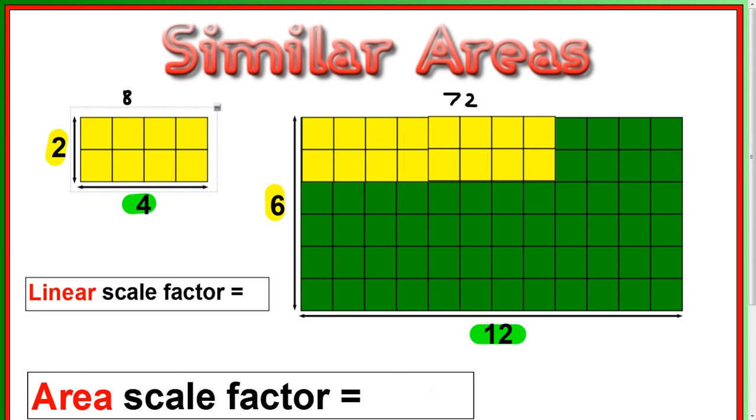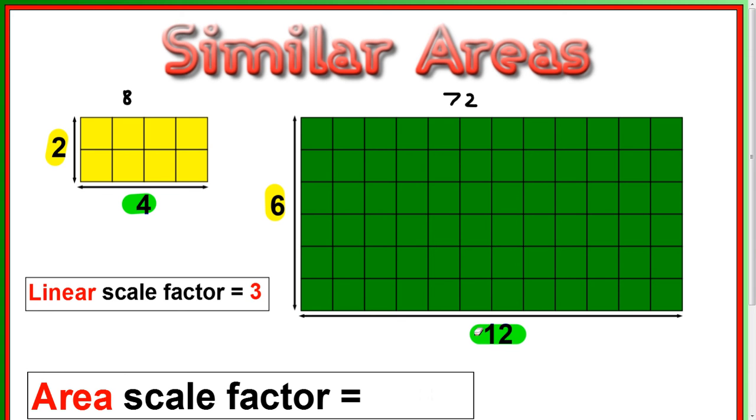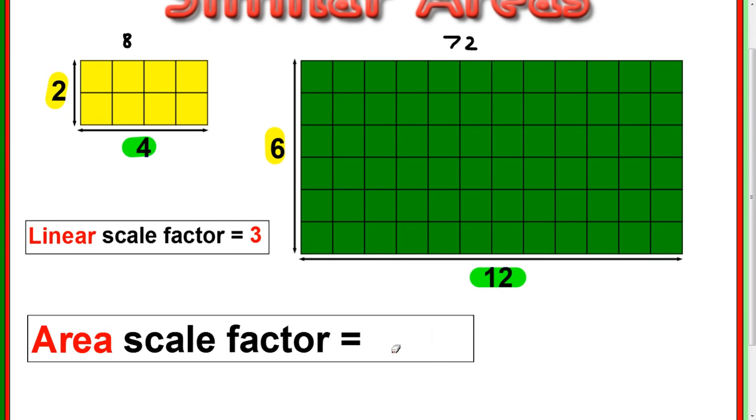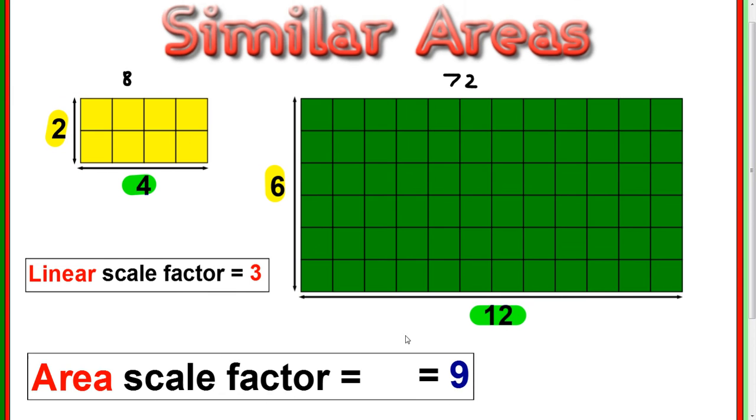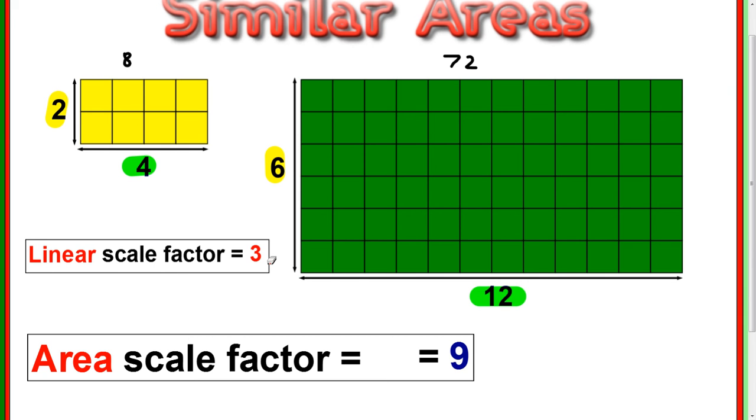So if the linear scale factor was 3, that's just a normal scale factor, we call it a linear scale factor here, that was 3, then the area scale factor was 9. How did we get from 3 to 9? Well, 3 times 3. What's happening with that then? Well, really just 3 squared. If you take 3 squared, you get to 9. So does that work every time? If the linear scale factor is a value, do you square the linear scale factor to get the area scale factor?